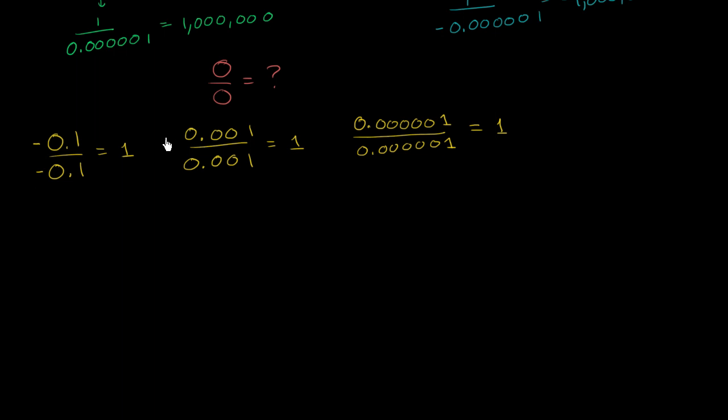I could make these negative, and I'd still get the same result. Negative this thing divided by negative this thing still gets me to 1. So based on this logic, you might say, hey, well, this seems like a pretty reasonable argument for 0 divided by 0 to be defined as being equal to 1.